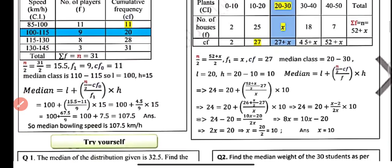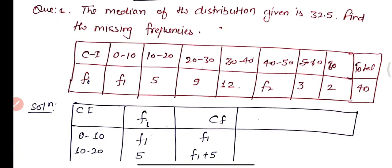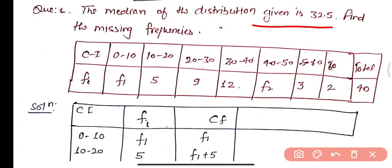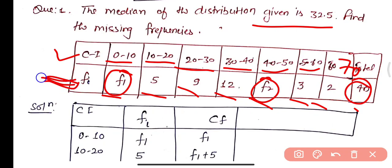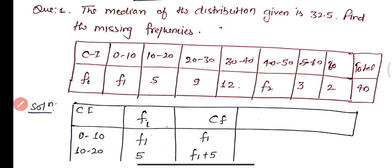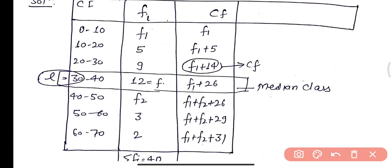Let's move ahead to the solution. Question 1: The median of the distribution given is 32.5. Find the missing frequencies f1 and f2. The median is already given as 32.5. The class intervals are 0–10, 10–20, 20–30, 30–40, 40–50, 50–60, and 60–70 with frequencies f1, 5, 9, 12, f2, 3, and 2. The total frequency is 40.